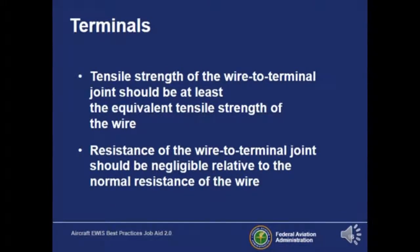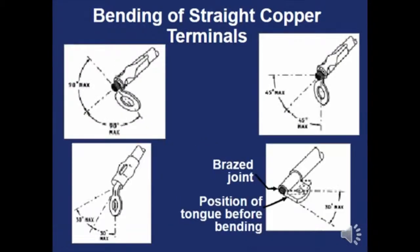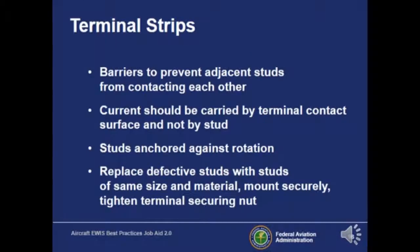Terminal ends: the end of the wire, or the terminal, should be just as strong as the wire itself. If somebody pulled on the terminal, it should not be weaker than the rest of the wire. Terminals are metal, so they shouldn't be bent back and forth — that will cause them to break. Terminal strips function like a junction box where wires come together to transfer electricity. The studs in terminal strips should not contact each other; current should be transferred at the terminal contact surface. Studs should be anchored against rotation and defective studs should be replaced.